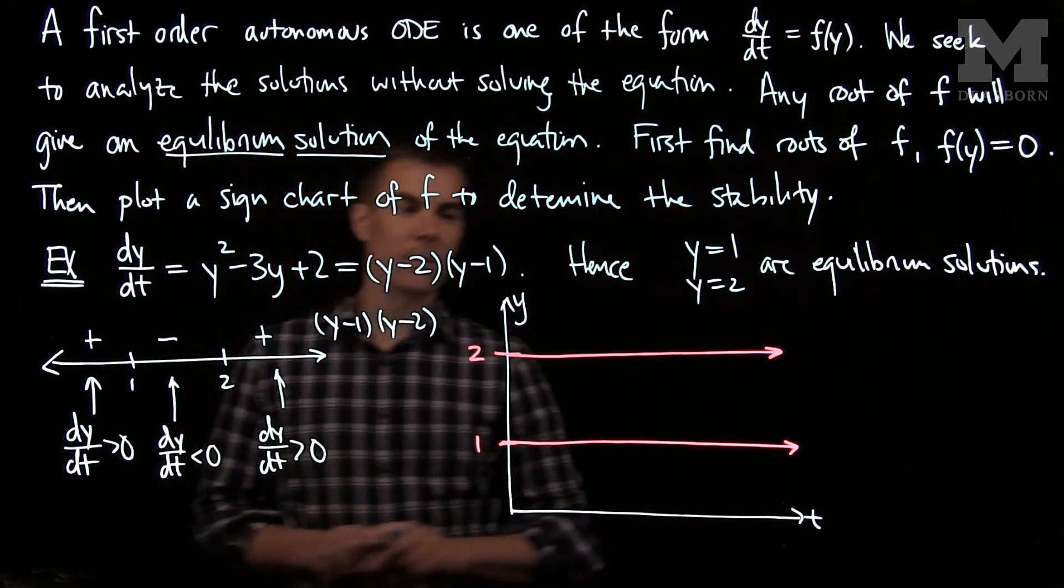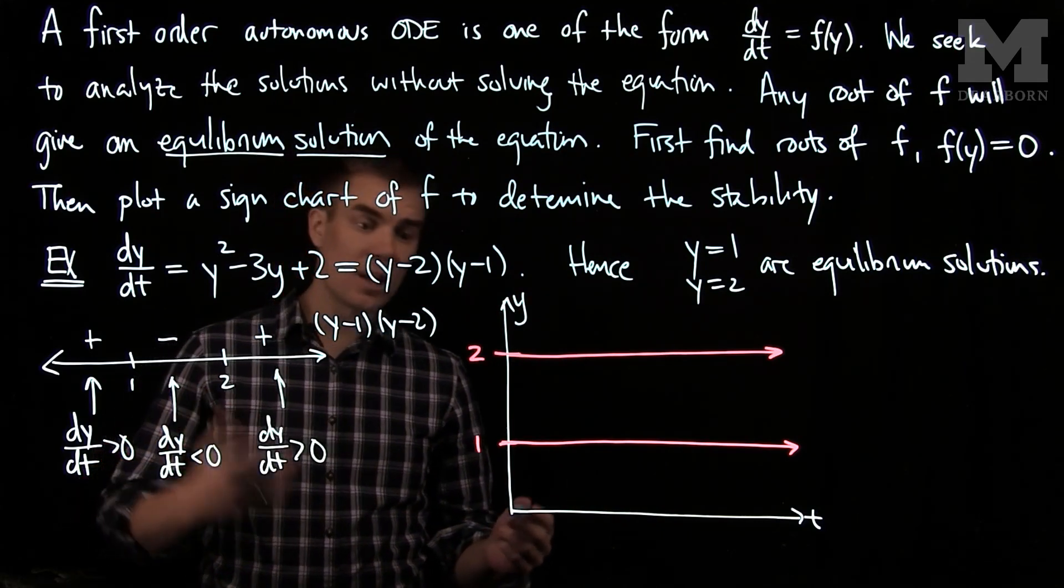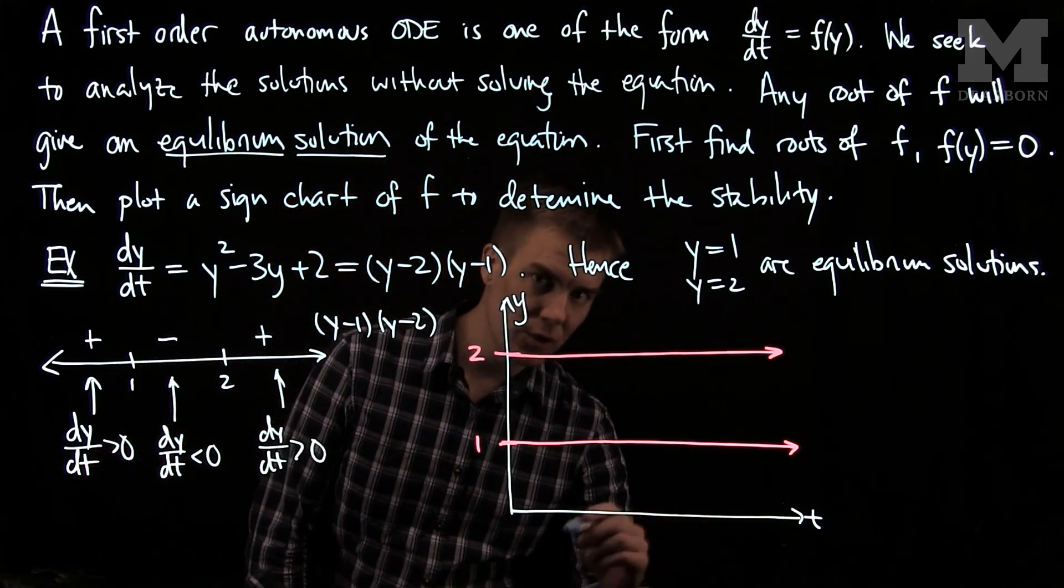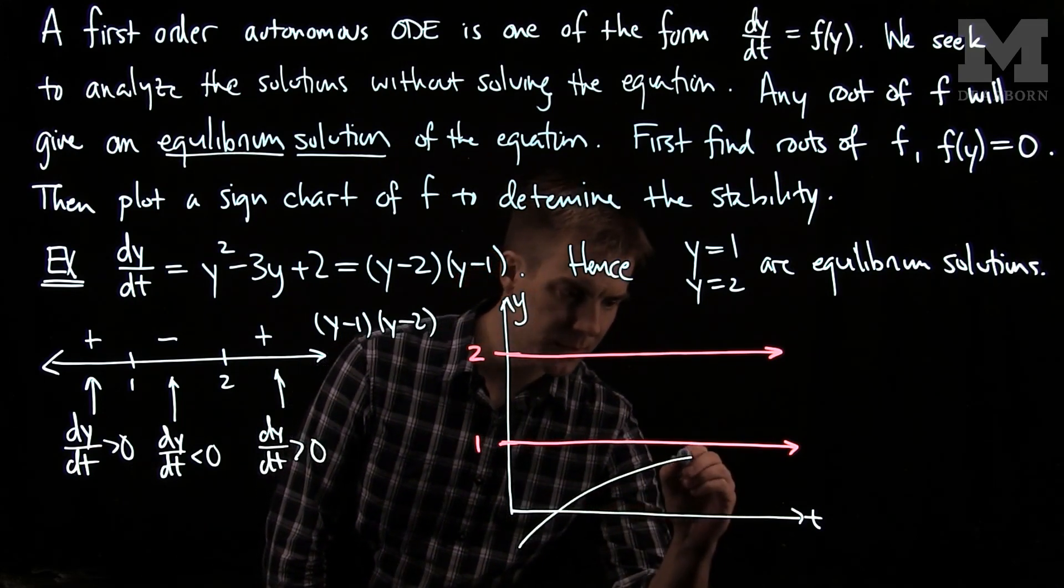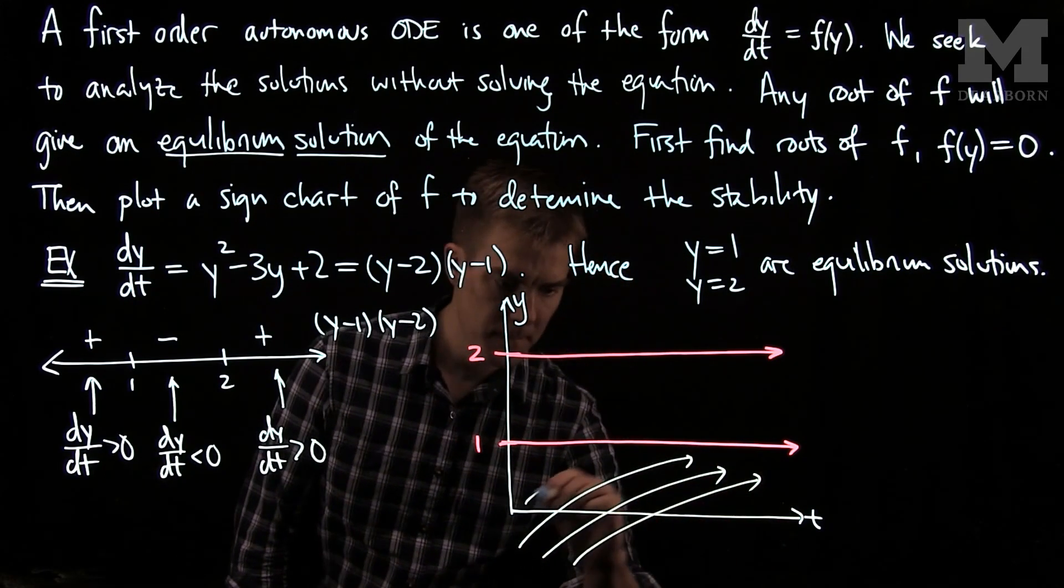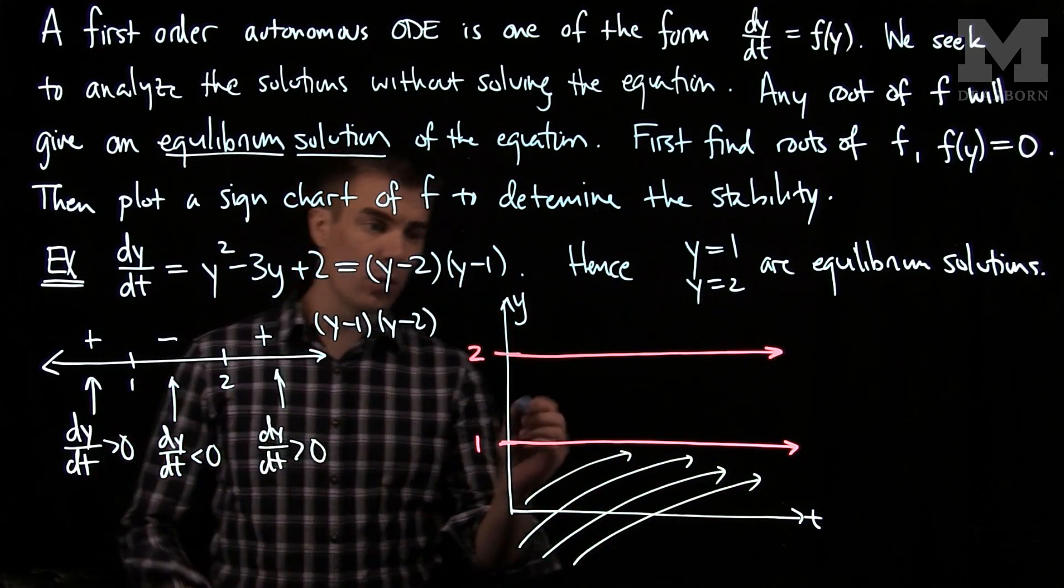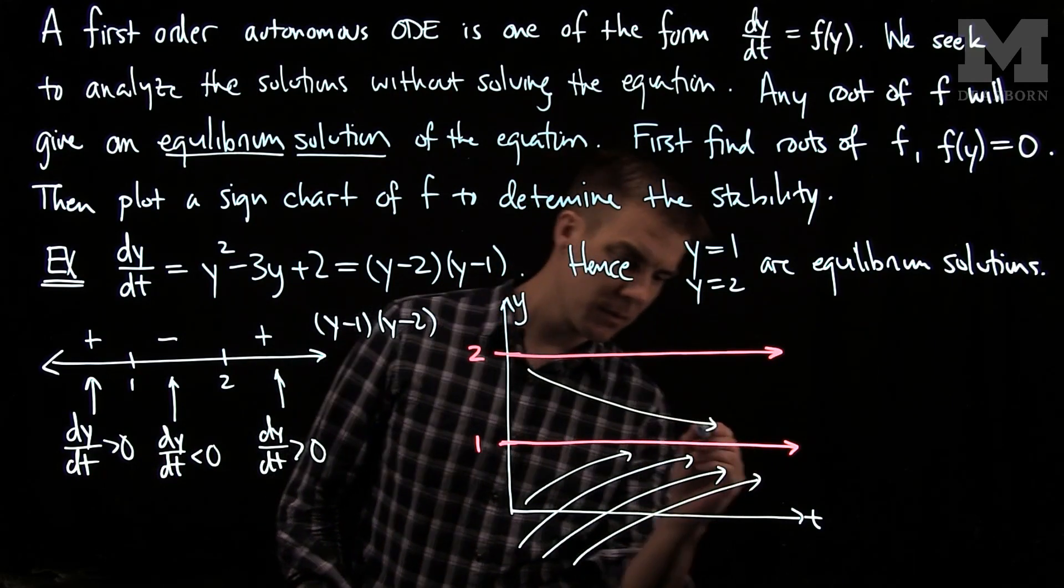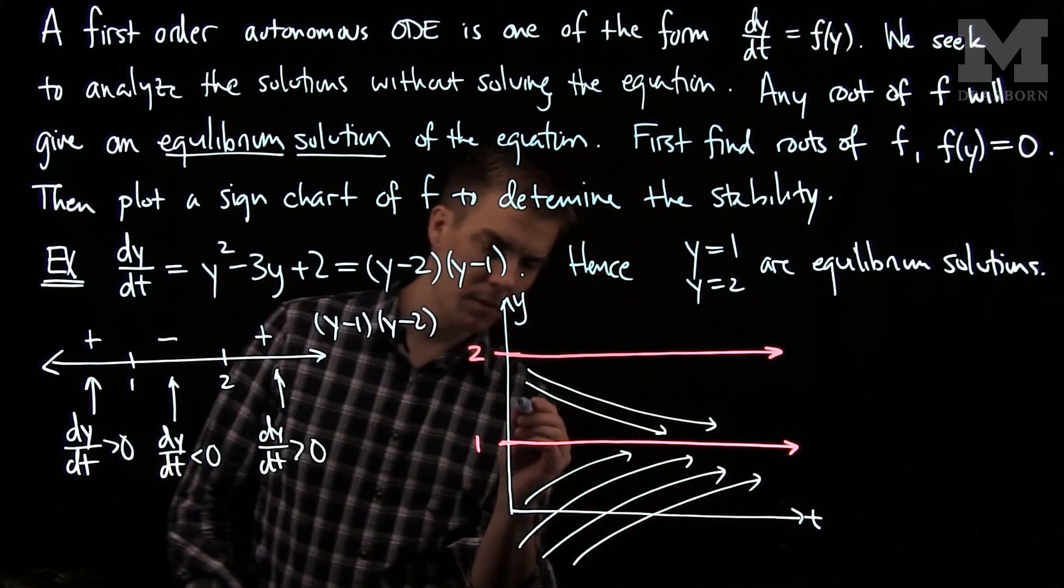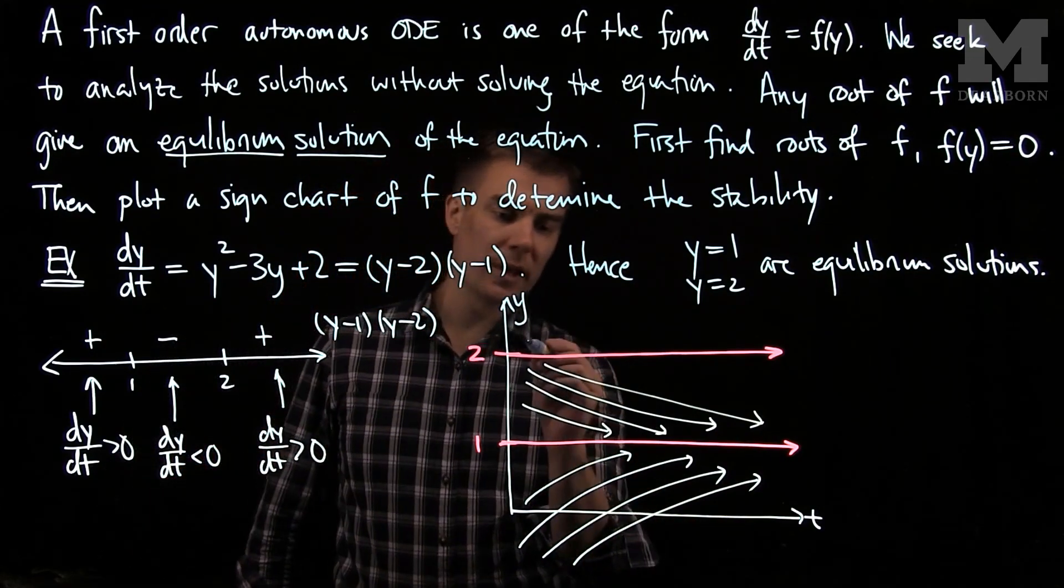Using the information from our sign chart, I know that if a solution starts less than 1, it will increase. So any solution that resides less than 1 will increase. Any solution that starts between 1 and 2 will decrease. And any solution that starts above 2 will increase.